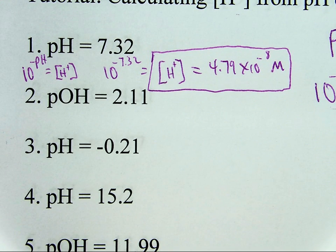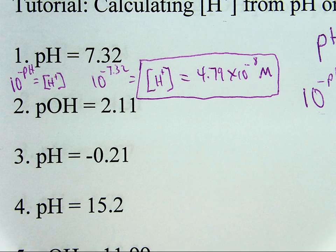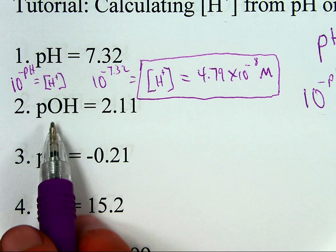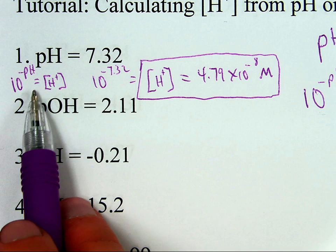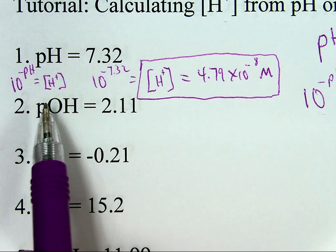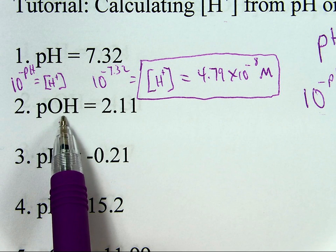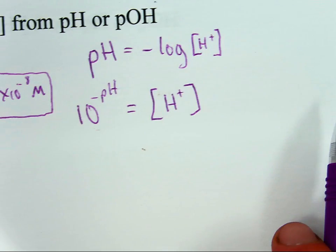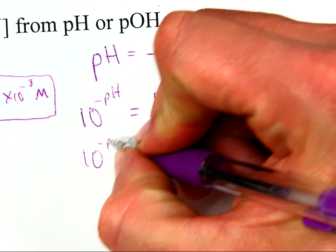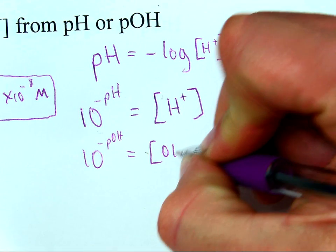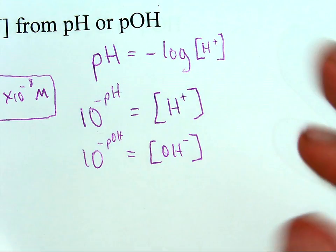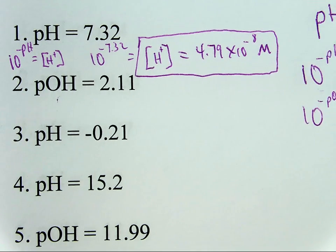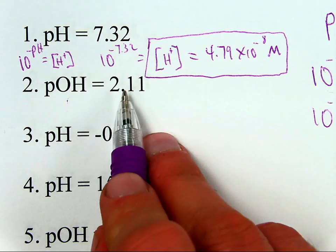Now, next one, pOH 2.11. All right, how am I going to get that? Well, the big thing here is, if you do this, 10 to the negative pH, that's not going to, well, that will get you hydrogen ion concentration. This isn't pH. Okay, in fact, if you take 10 to the negative pOH, what you wind up with is not hydrogen ion concentration. 10 to the negative pOH is hydroxide ion concentration. And, that's not what we're looking for. The question is, this thing is asking us to find, calculate, hydrogen ion concentration.